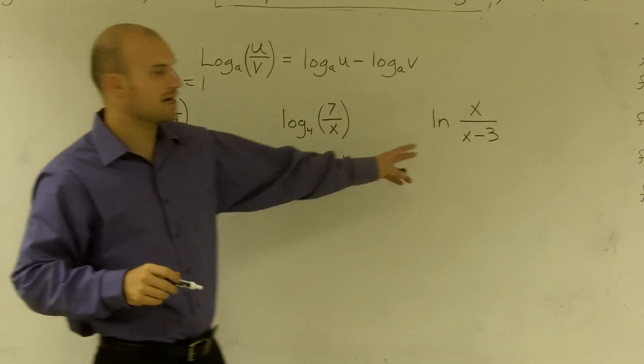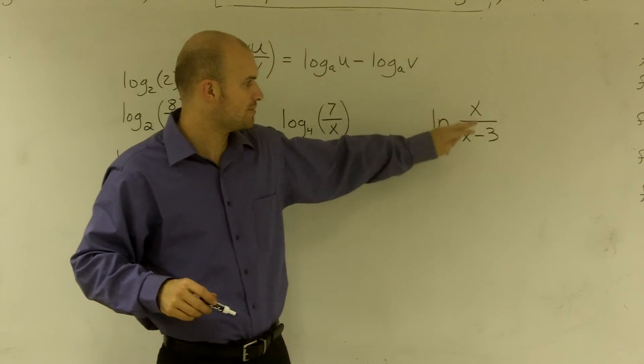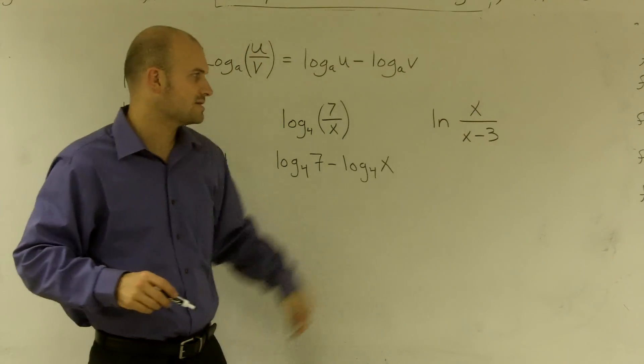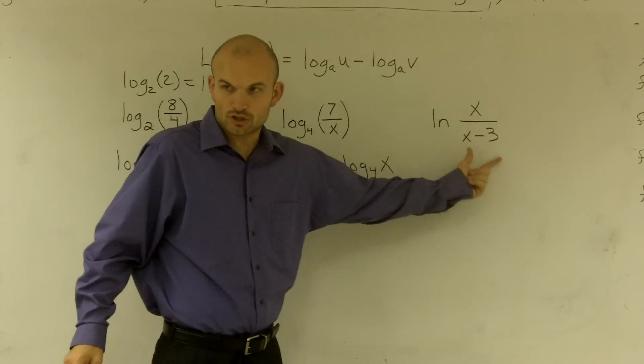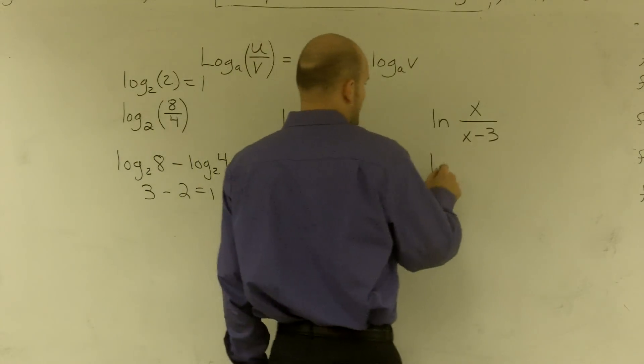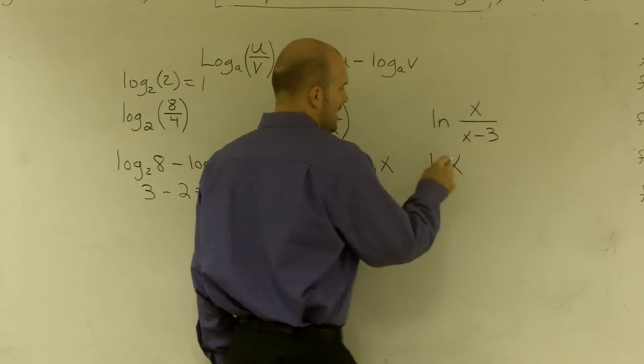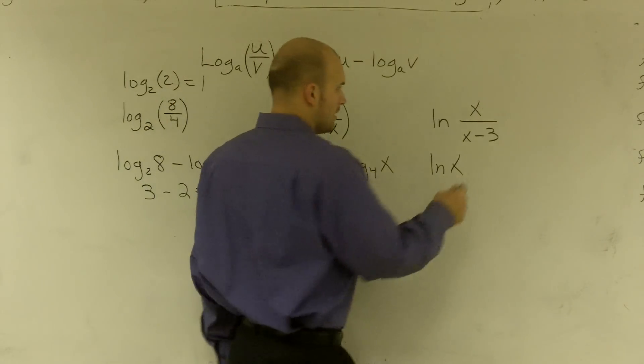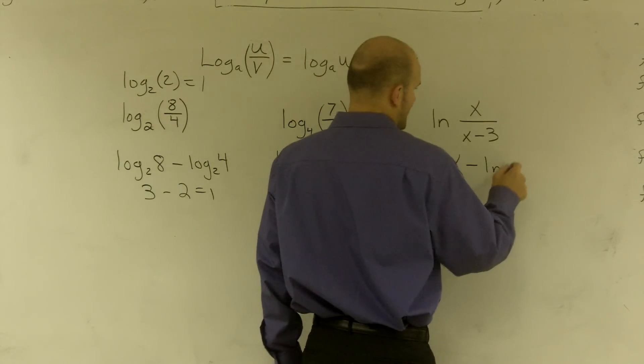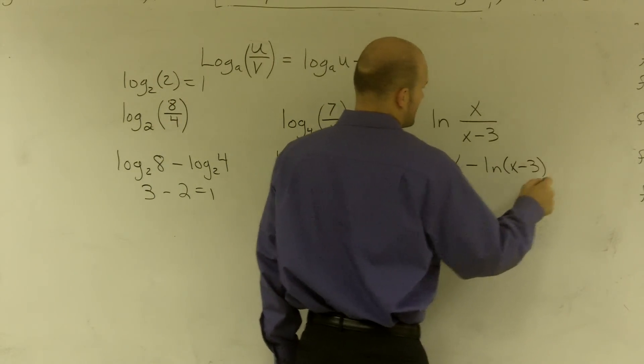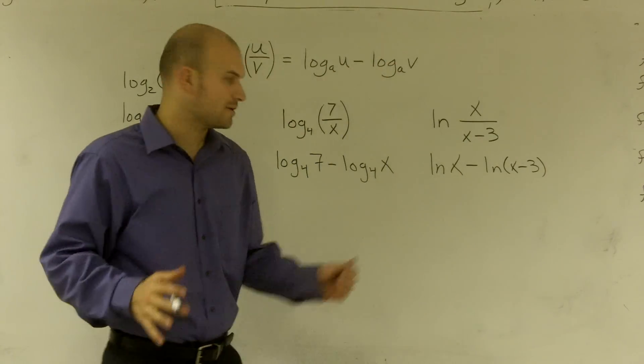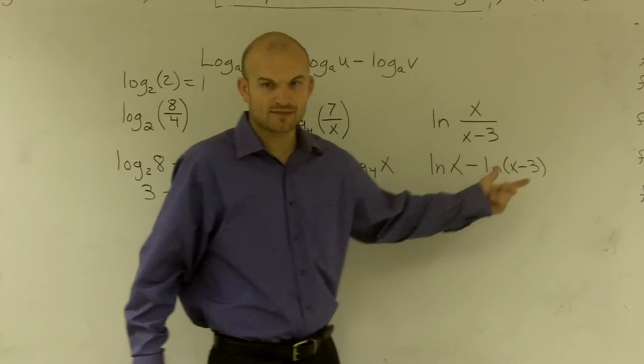And for this problem, we have a monomial and a binomial. So I'm going to treat this together as a term on itself. So I'm going to do ln of x. Remember, ln has a base e minus ln of x minus 3. I'm going to put that in parentheses just to make sure I remember that whole term is what I'm evaluating for my logarithm.